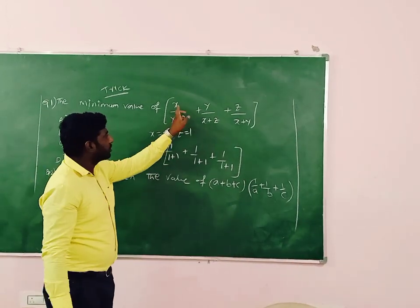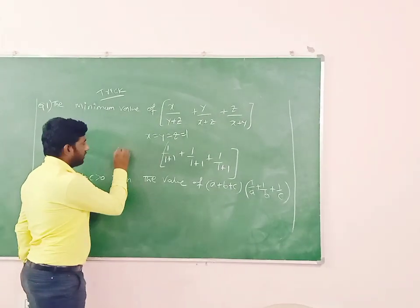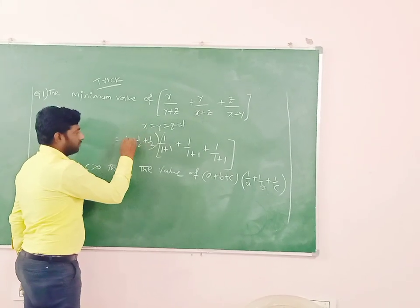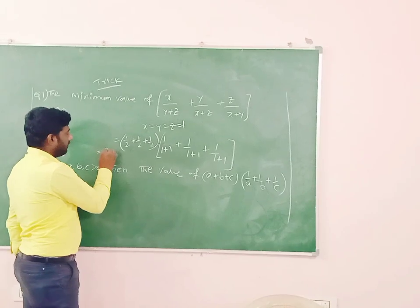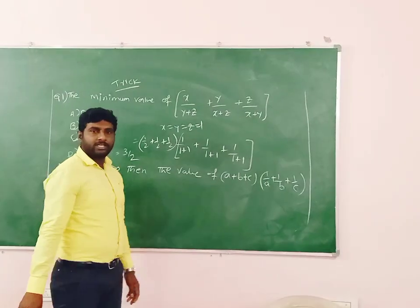Here we substitute x equal to y equal to z equal to 1. That means 1 by 2 plus 1 by 2 plus 1 by 2. That means 3 by 2. Option 3 is correct. Now, next one.